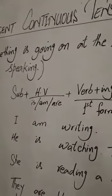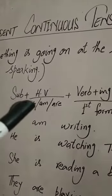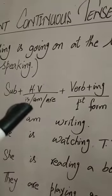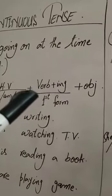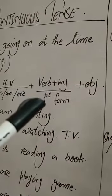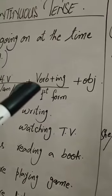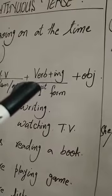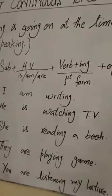اس کا formula دیکھیے: subject plus helping verb. Helping verb میں تین یوز ہوتے ہیں: is, am, are. اس کے بعد verb کی first form plus ing. اس میں صرف verb کی first form ہی use ہوتی ہے، اور اس کے ساتھ ing کا use کیا جاتا ہے۔ اور پھر ہمارا last میں object آ جاتا ہے۔